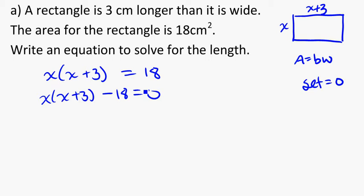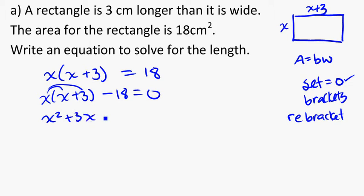Now, I still can't solve this yet because it's not really in brackets or factored correctly. And so that's the next thing we need to do is get it into brackets. But here, we've got some stuff in brackets and one thing that's not. So what we have to do is actually re-bracket it, do it again. So what we need to do is expand it out. We get x squared plus 3x minus 18 is equal to 0.